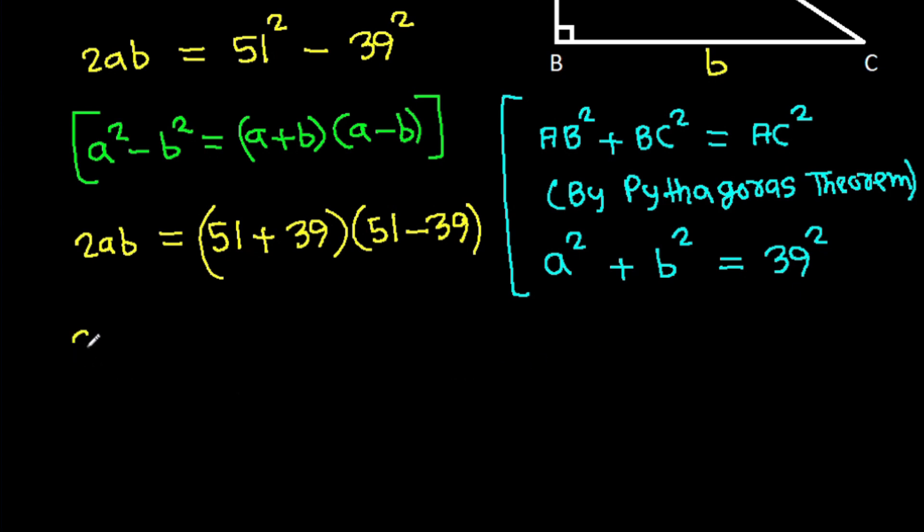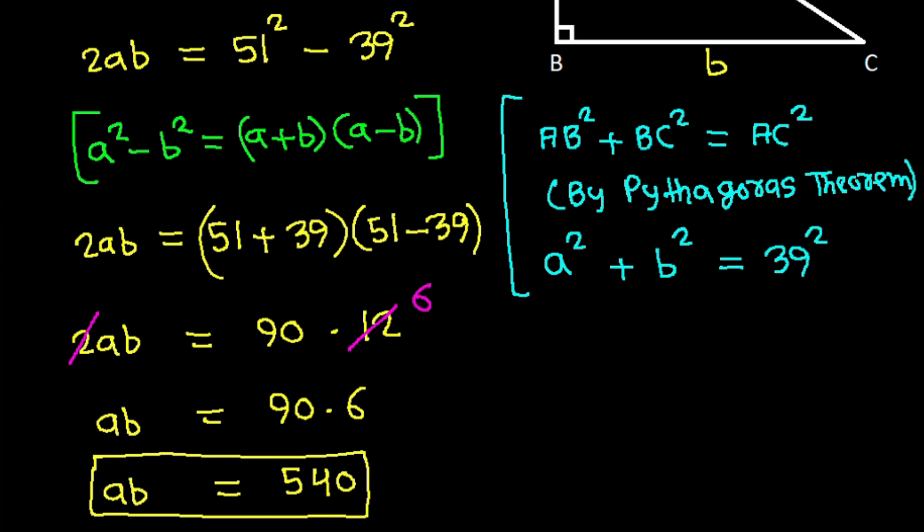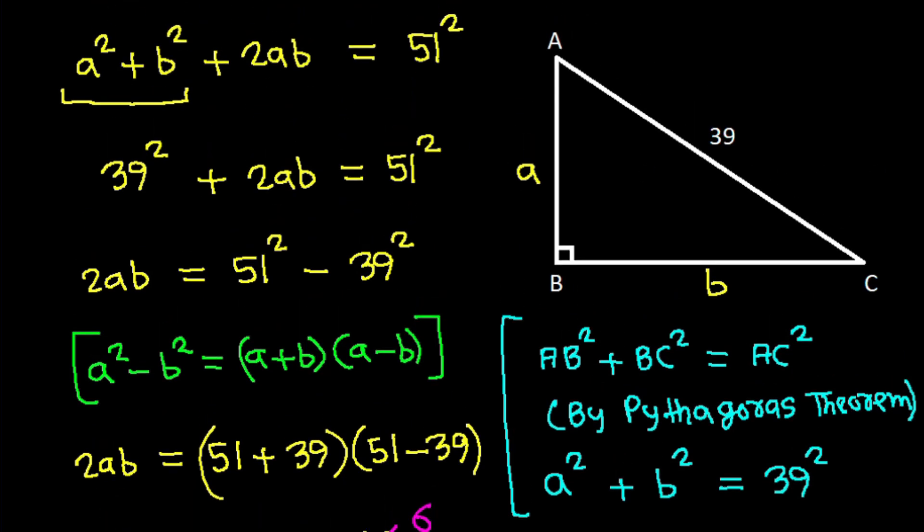So 2AB will be 1080, and AB will be 540. And AB is 540.